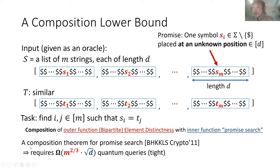We invoke a composition theorem for this promised search problem by Brassard et al. They prove that this composition problem requires quantum query complexity equal to the product of the outer and inner function complexities. The inner function — global search over D positions — has √D complexity. The outer function — bipartite element distinctness over M elements — has M^{2/3} complexity. So the entire problem takes M^{2/3} · √D quantum query complexity, and this is tight.